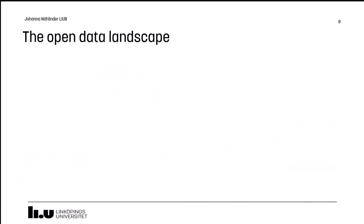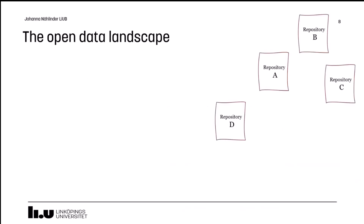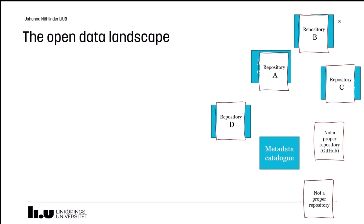Moving on from data management to open data — where do you find open data? The landscape is a bit different from that of publications. Research data is often found in repositories, and these repositories are either general or subject-specific. But you can also find open data in non-repository platforms, which are not organized the same way as a repository. The most important of them is GitHub. Each repository has a metadata standard and a metadata catalog, so they structure information about datasets in different manners.